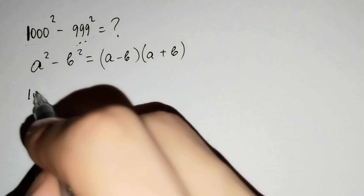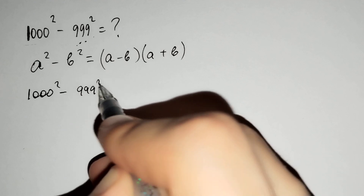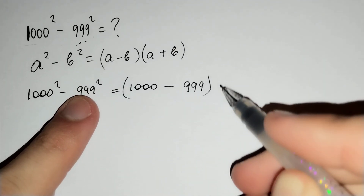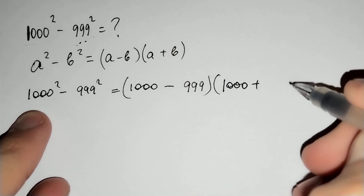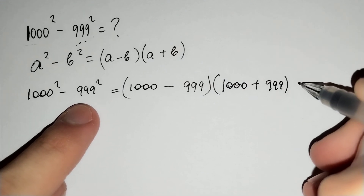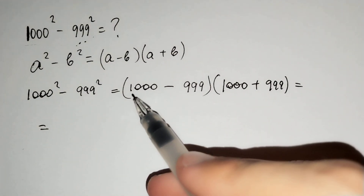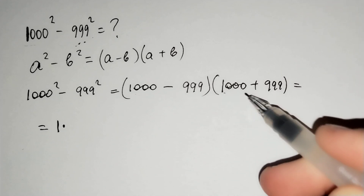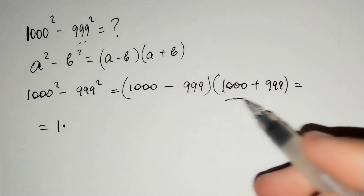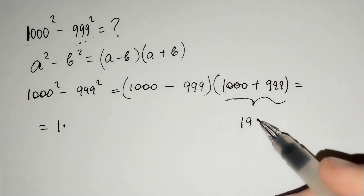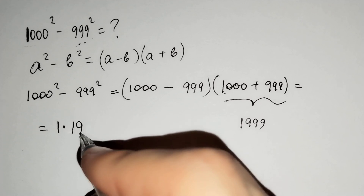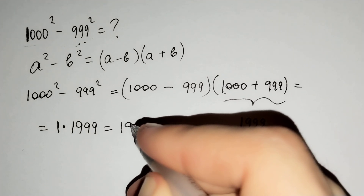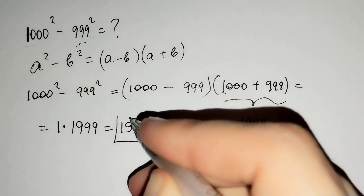this is equal to 1000 minus 999, times 1000 plus 999. We know that 1000 minus 999 equals 1, and 1000 plus 999 equals 1999. So the answer is 1999. This is just our answer.